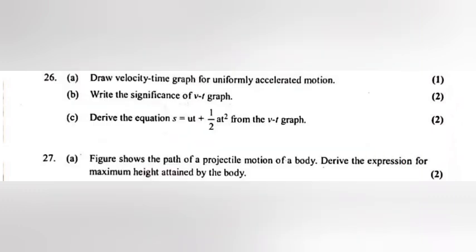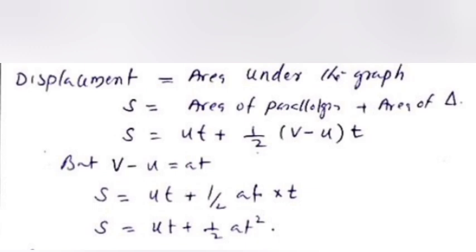26C: Derive the equation S is equal to ut plus half at square from the VT graph. Answer: Displacement is equal to area under the graph. S is equal to ut plus half V minus u into t. But V minus u is equal to at. S is equal to ut plus half at into t. S is equal to ut plus half at square.